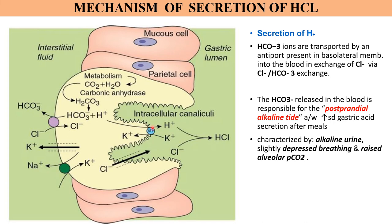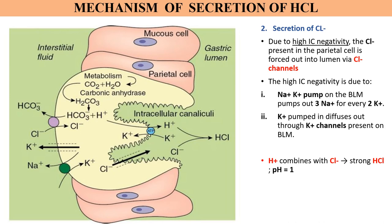The bicarbonate ions formed alongside H⁺ are transported via the basolateral membrane of the parietal cells through the bicarbonate-chloride antiport. Thus, along with increased H⁺ secretion there is increased bicarbonate entering the blood after a meal — this phenomenon is known as postprandial alkaline tide.